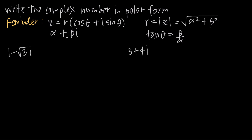A complex number is given in the form alpha plus beta i, or sometimes written as a plus bi. From our complex number, we can identify that alpha is equal to 1, and beta is equal to negative square root of 3. With those values of alpha and beta, we use specific formulas to find r and theta.